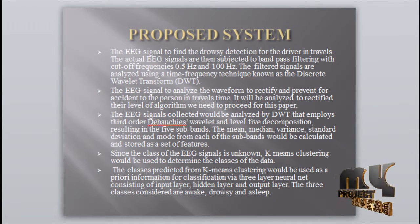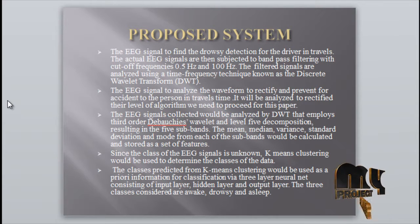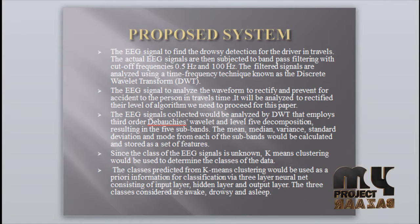Proposed system: The EEG signals are used to find the drowsy driver. The EEG signal is subjected to a band-pass filter with cut-off frequencies from 0.5 to 100 Hz. The filtered signals are analyzed using the discrete wavelet transform. EEG signals are analyzed and decomposed using the Daubechies wavelet at multiple levels. Feature extraction methods include local binary pattern, wavelet features, and biorthogonal waveforms, followed by a neural network for classification.